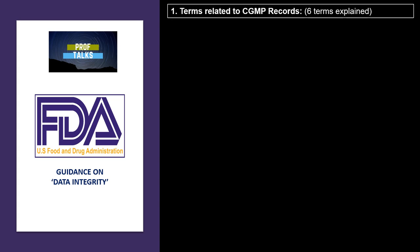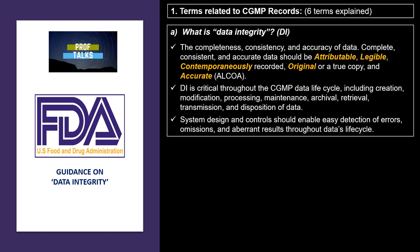In the first aspect, rather than defining a question, the guidance explains six terms. The first is data integrity: the completeness, consistency, and accuracy of data, which complies with the ALCOA principles. Data integrity is critical throughout the data life cycle, right from data creation to data disposition. The system design and controls should enable easy detection of errors and any manipulation of data throughout the data life cycle.